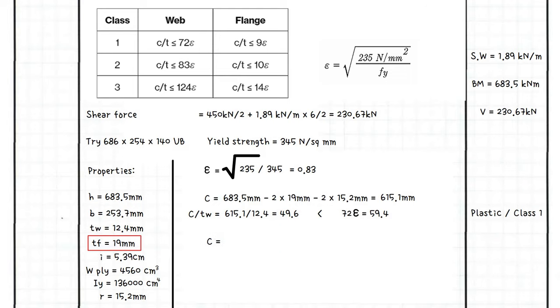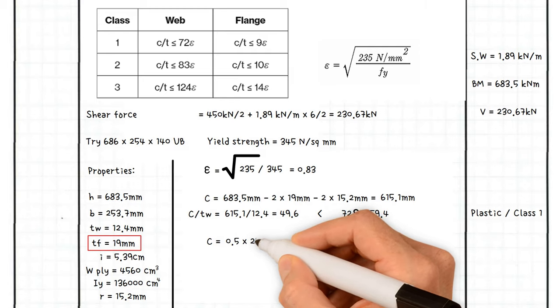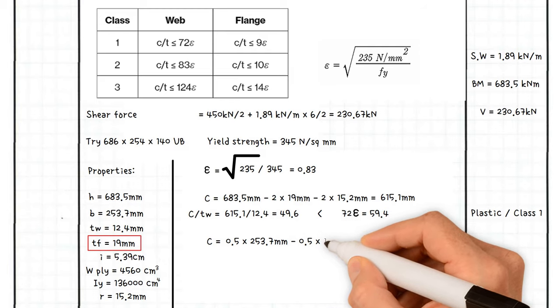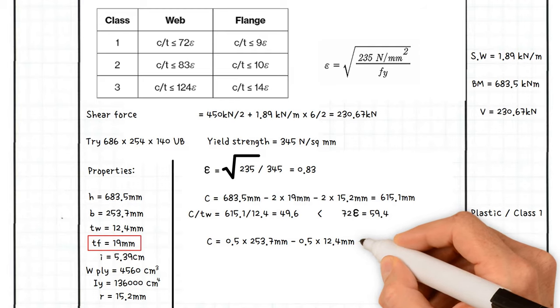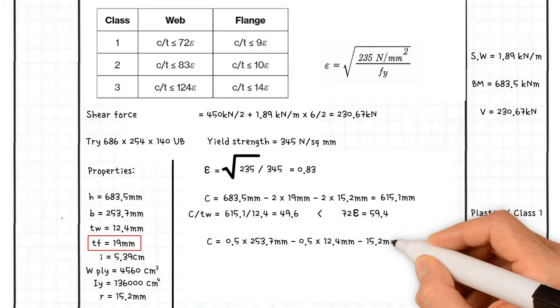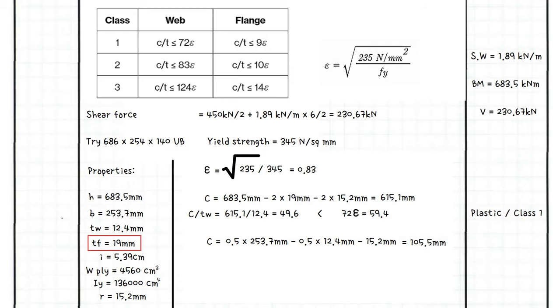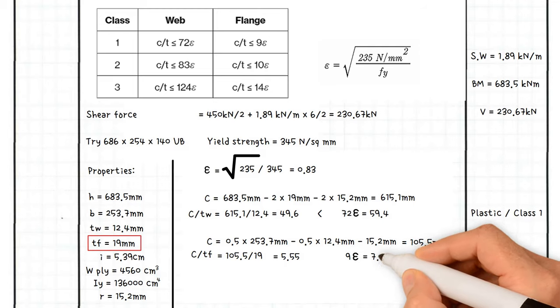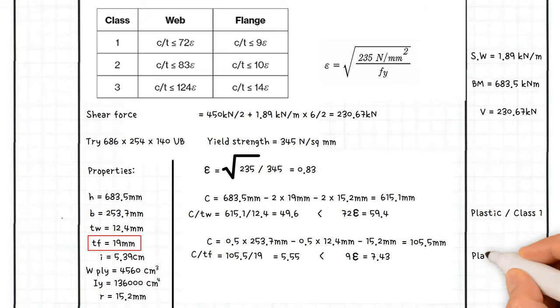Next, working out C flange, which equals half of the width of the section, half of 253.7, minus half of web thickness 0.5 times 12.4, minus the root radius 15.2 millimeters. This gives us a value of 105.5 millimeters. As a result, C over flange thickness equals 105.5 millimeters divided by 19 millimeters, which equals 5.55. We compare this to 9 epsilon, which equals 7.43, which is greater than 5.55. So the section is plastic Class 1. Therefore, section is Class 1 category.